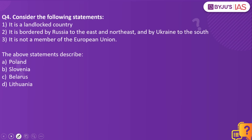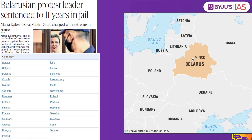Now let's look into the next practice question. Consider the following statements: it is a landlocked country; it is bordered by Russia to the east and northeast and by Ukraine to the south; it is not a member of the European Union. The above statements describe — is it Poland, Slovenia, Belarus, or Lithuania? The answer is Belarus. We took this practice question because this article makes a mention of Belarus, and you can expect map-based questions since UPSC can ask questions about Belarus.